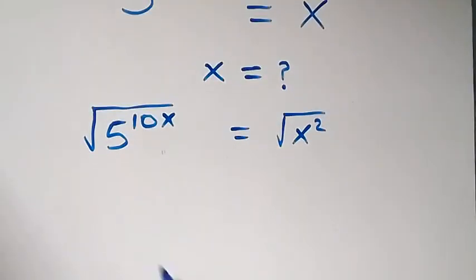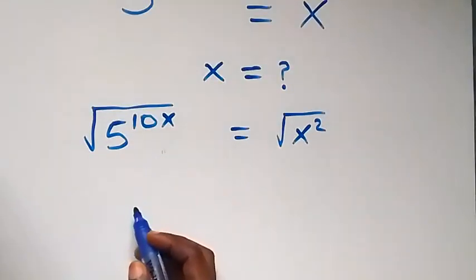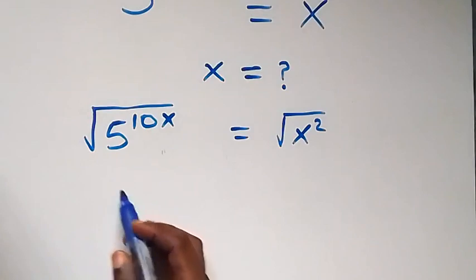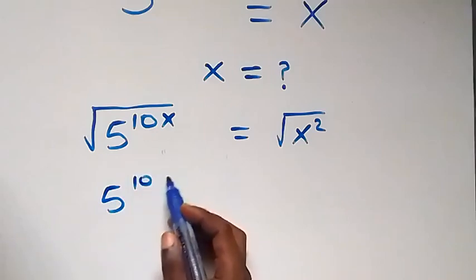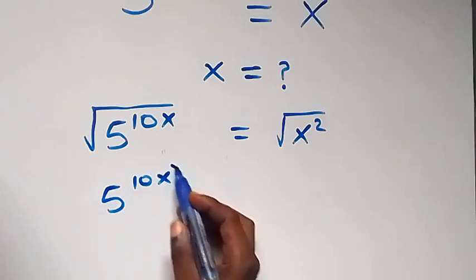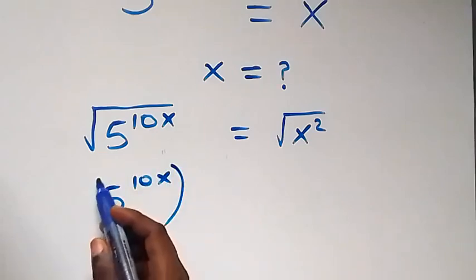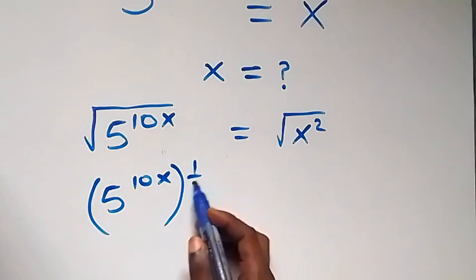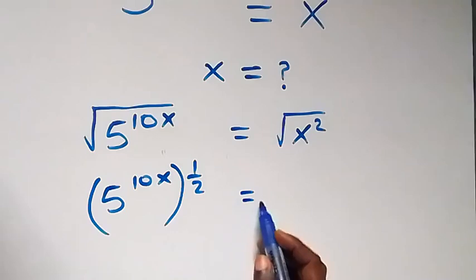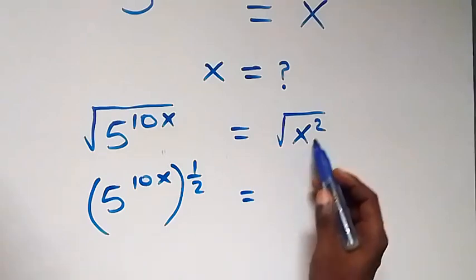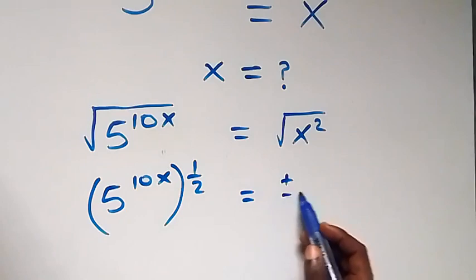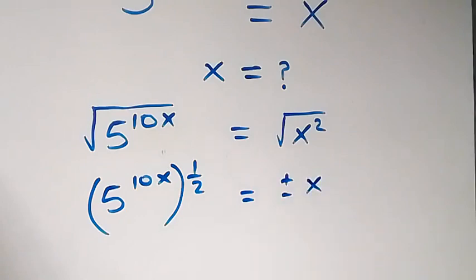Then from here, this implies we have 5 raised to power 10, raised to power x, then which is raised to power half. And on this side, this gives us plus or minus x. Square root and square cancel.